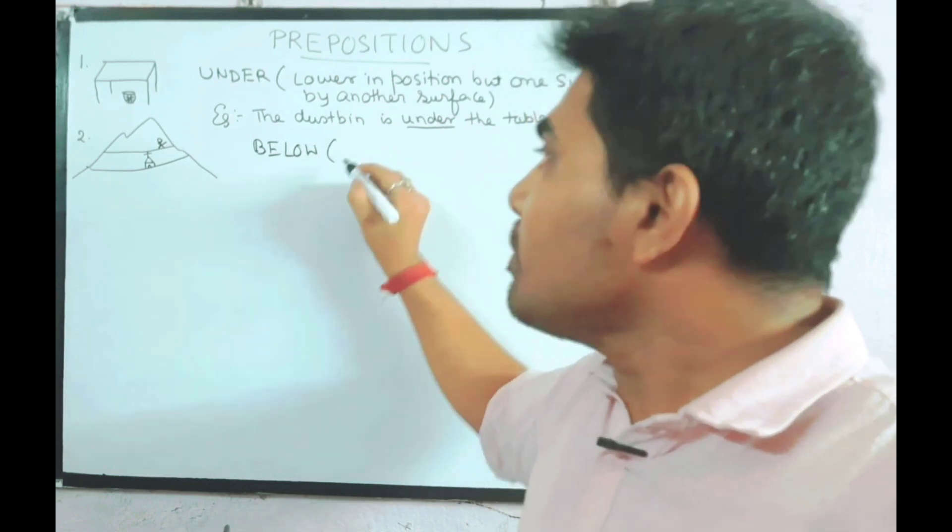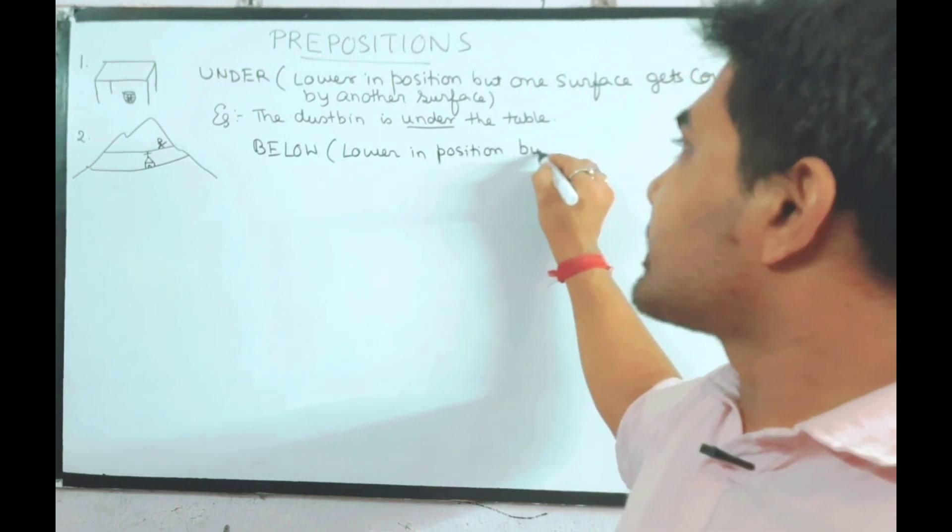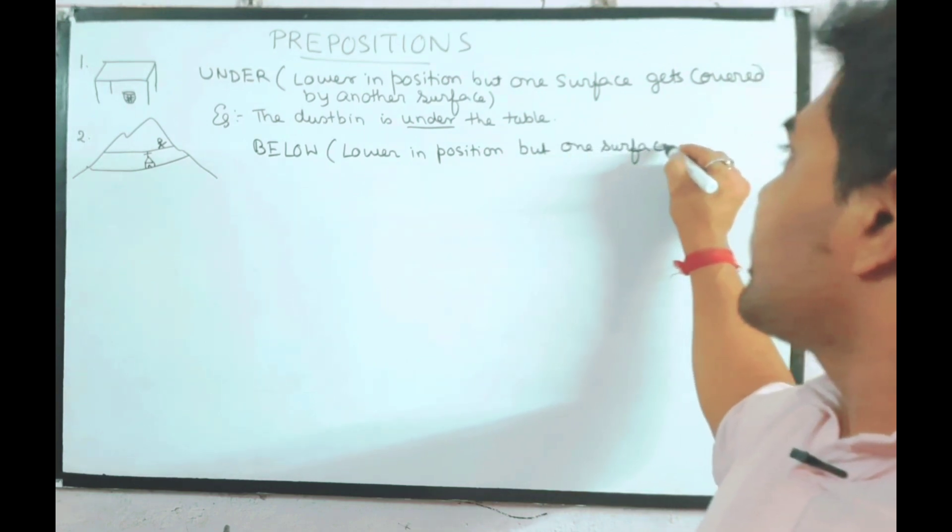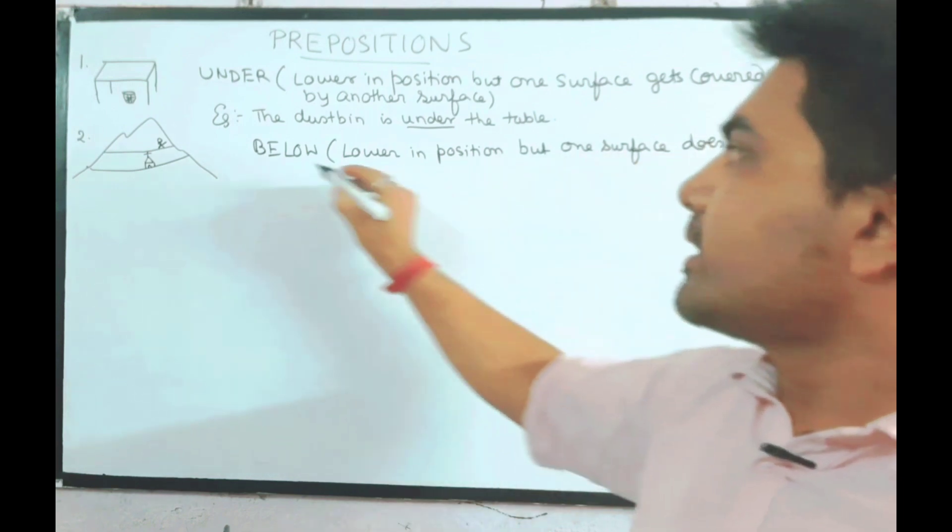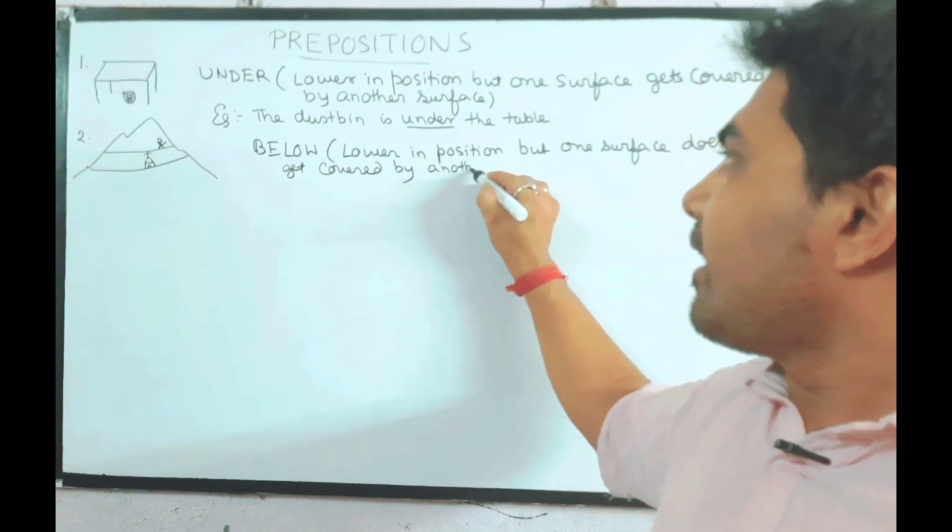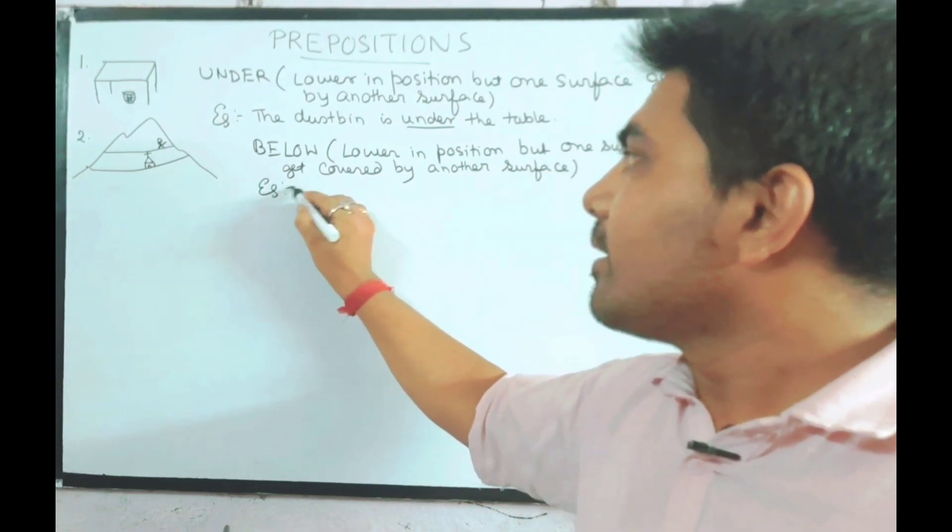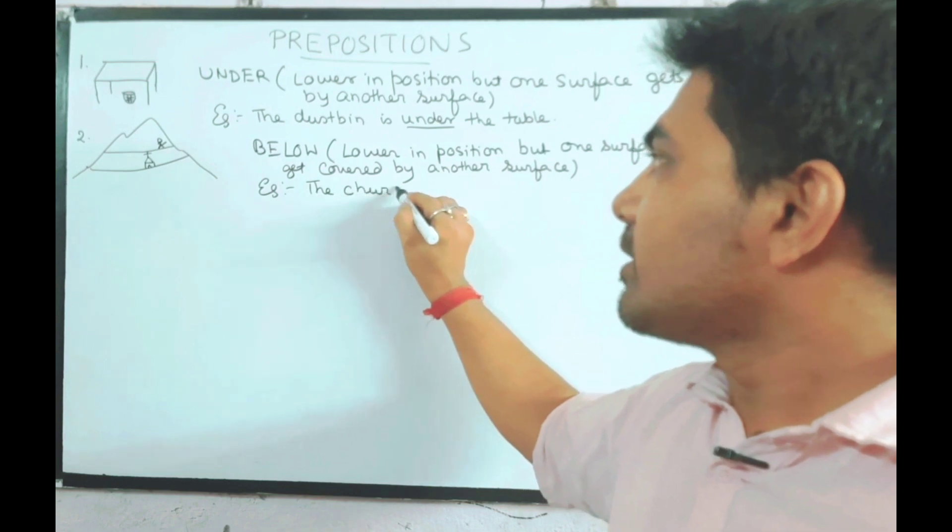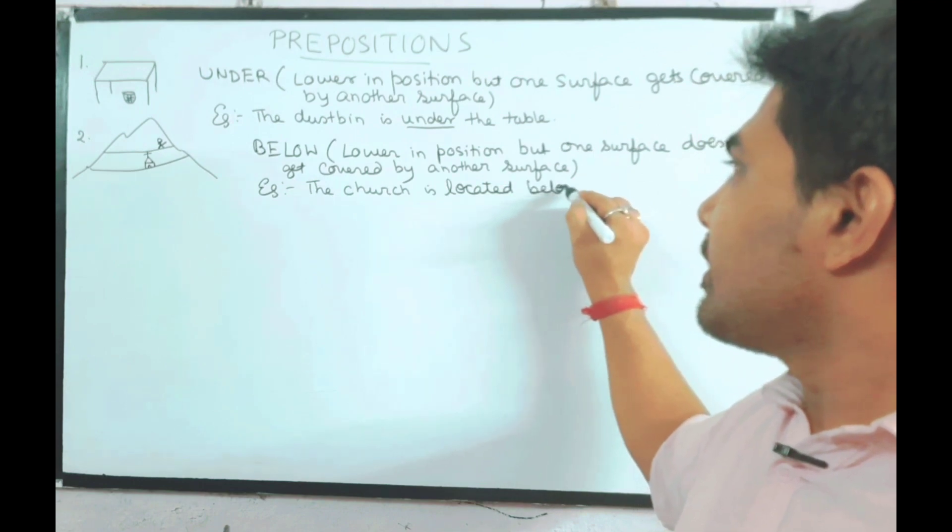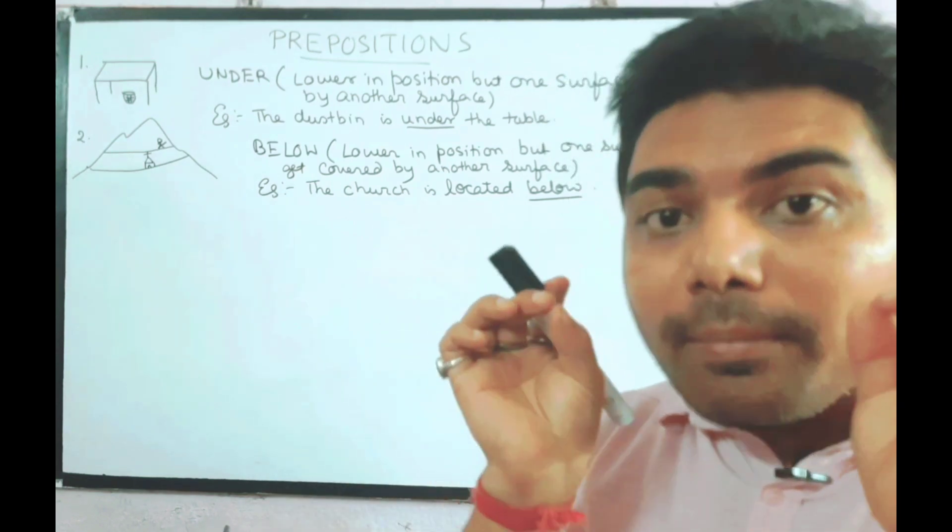So below also means lower in position, but one surface does not get covered by another surface. Example: the church is located below.